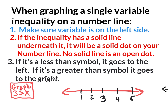When graphing a single variable inequality on the number line, make sure the variable is on the left side. Right here it says 3 is greater than x, and x is not on the left side. So I want to flip the entire thing: put x on this side and 3 on that side. If it was originally opening up to the 3, it has to continue opening up to the 3. So 3 is greater than x is really the same thing as x is less than 3, which is better to write because x is on the left side.